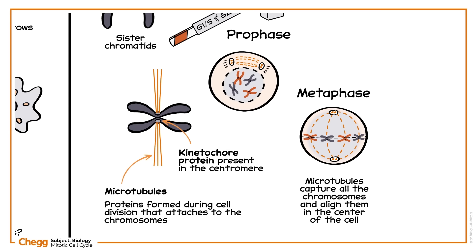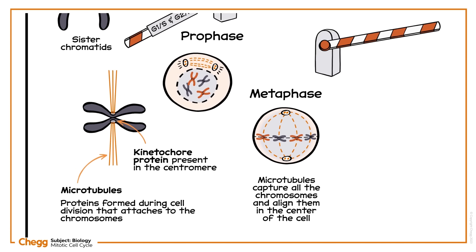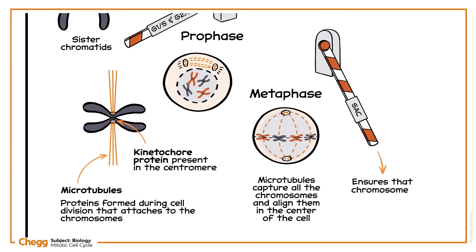Before entering the next stage, the cell faces the third checkpoint, the spindle assembly checkpoint, or SAC, which in response to microtubule defects ensures that chromosomes are accurately segregated and activated during the transition from metaphase to anaphase.